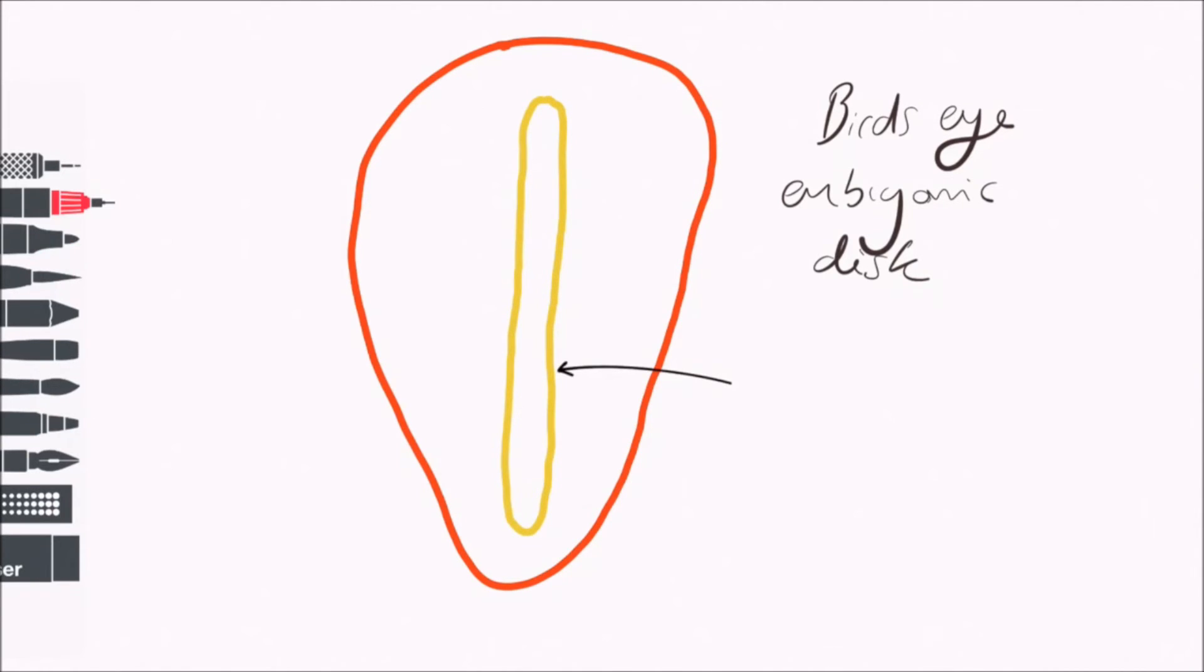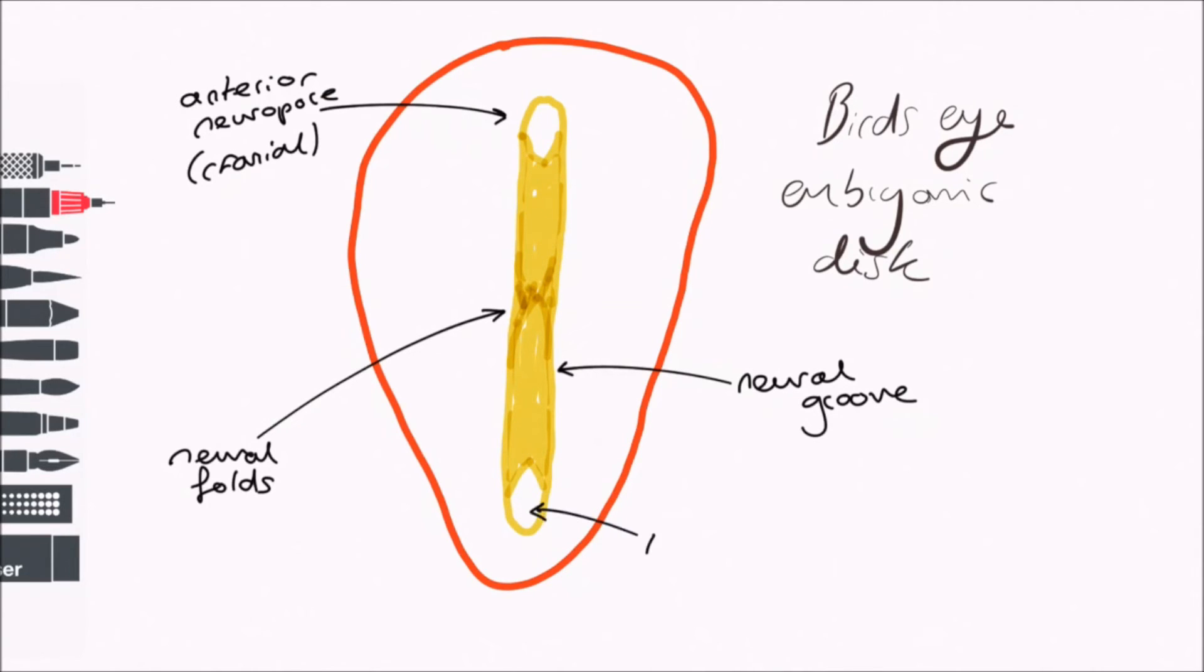Let's look back at the embryonic disc in the third week of development with the closure of the neural groove. Neural groove closure begins at the center of the trilaminar disc and spreads cranially and caudally to form the enclosed neural tube. When there is only a little bit of tube left to close, we have two open ends called the cranial or anterior neuropore and the caudal or posterior neuropore. The cranial neuropore closes on the 29th day and the caudal on the 30th.